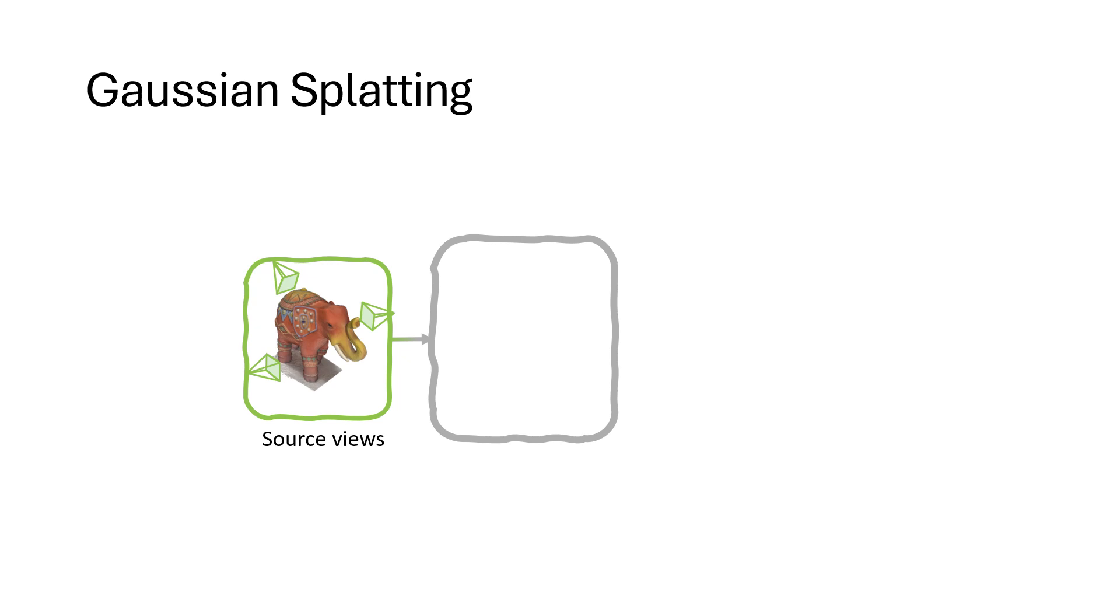Recently, Gaussian Splatting has emerged as a fast and accurate method for novel view synthesis. Instead of optimizing a neural network, the original 3D Gaussian Splatting optimizes a cloud of 3D Gaussians. The initial Gaussian centers are a sparse point cloud initialized from a structure-from-motion algorithm.